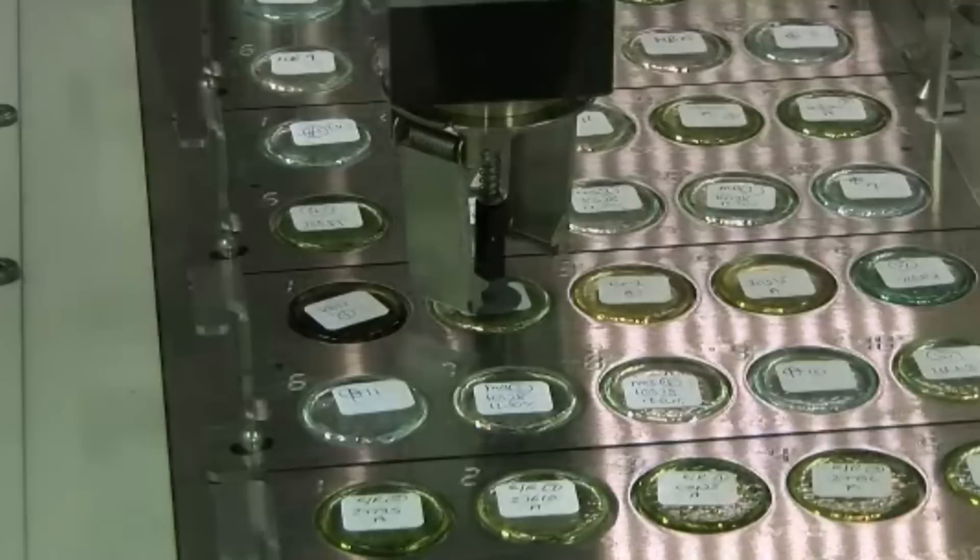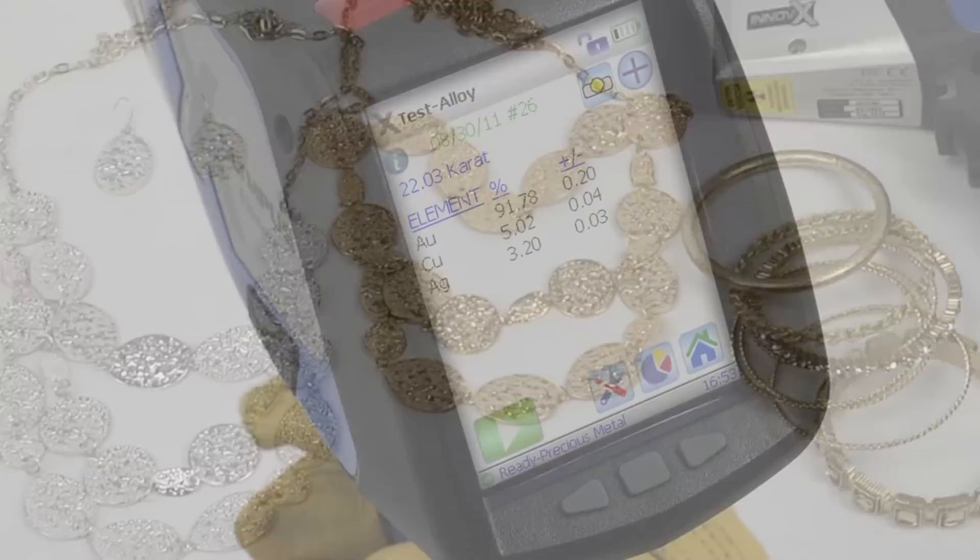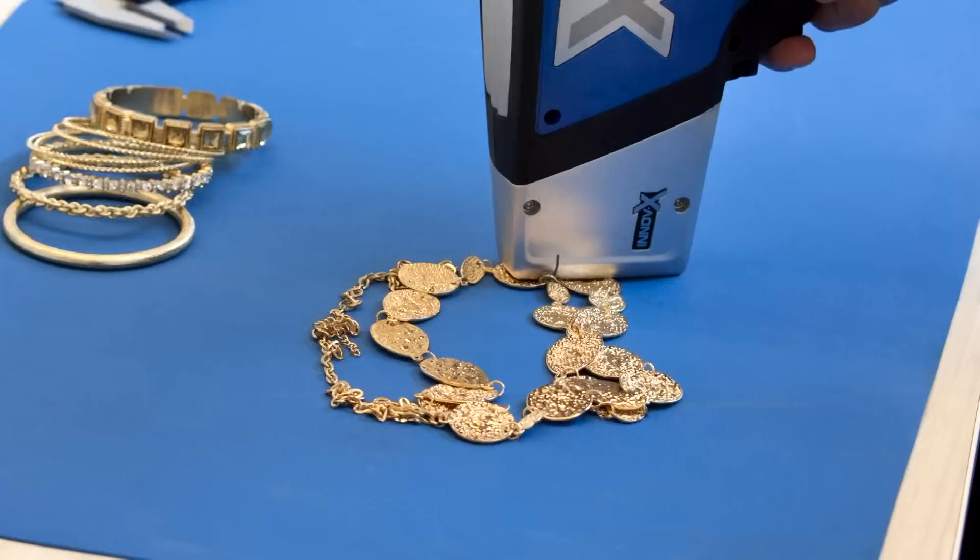Handheld XRF models have become an excellent tool for identification of alloys and is used to quickly identify the content of jewelry and other items—18 carat versus 14 carat, for example. However, it is important to remember that handheld instruments only analyze the surface.